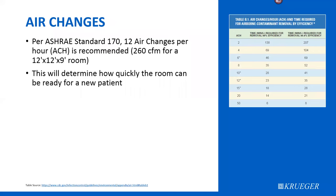Per ASHRAE standard 170, 12 air changes per hour is recommended for a patient isolation room, equating to about 260 CFM for a 12-foot by 12-foot room with a 9-foot ceiling. This determines how quickly the room can be ready for a new patient. According to CDC recommendations, at 12 air changes per hour it takes approximately 23 to 35 minutes for the room to be completely scrubbed, after which the room is deemed suitable for a new patient.